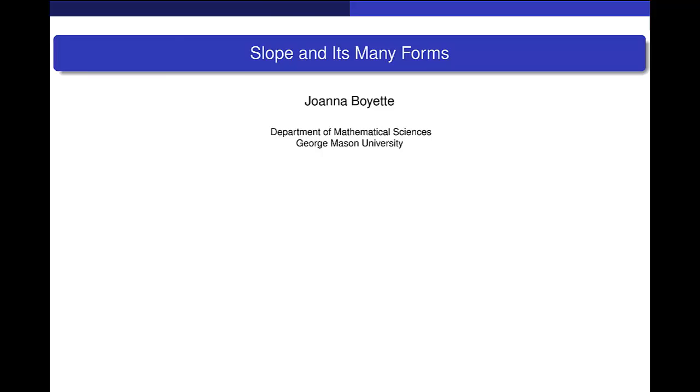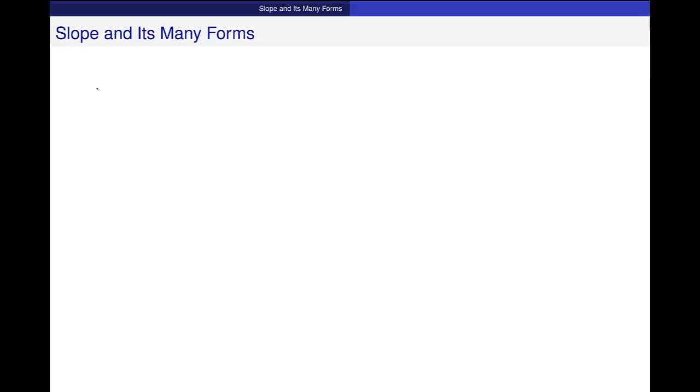Let me just remind you, slope, which we usually call m, is y2 minus y1 over x2 minus x1. And this is the change in y divided by the change in x. And that's the form that we use when we have two points.